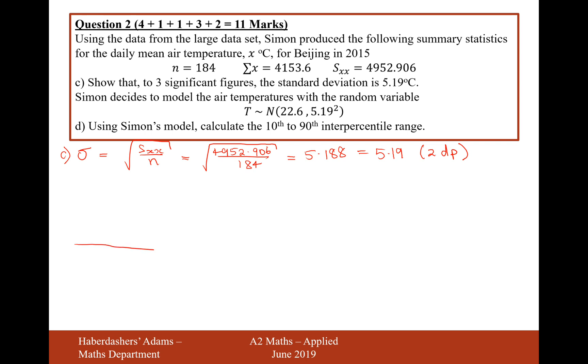So what that effectively means is if we draw our normal distribution like that and we have the mean at 22.6, we want to work out the range of the interpercentile range where we have 0.1 on each side, because this will be the 90th percent so 0.9 percent there.